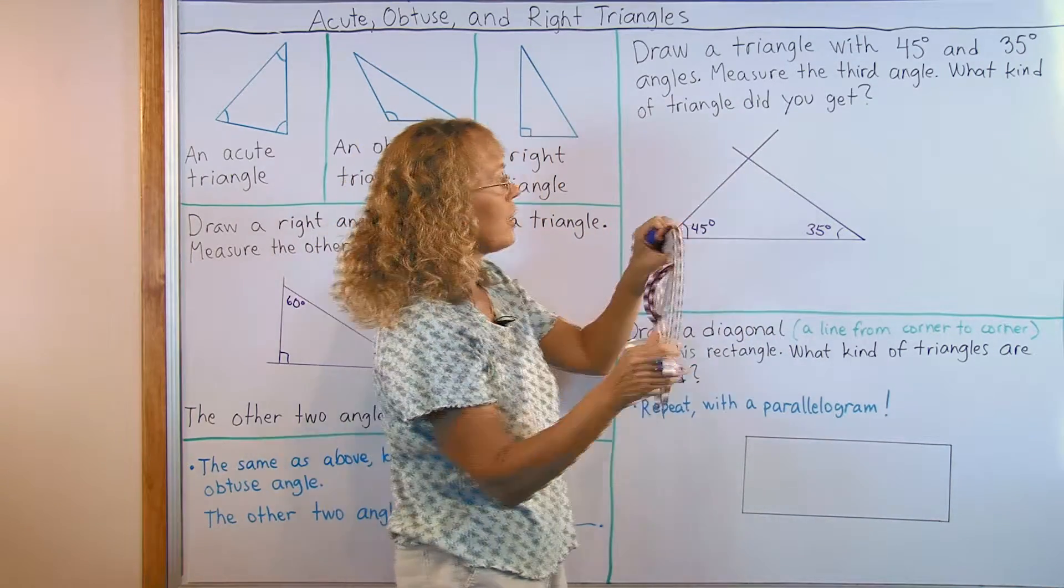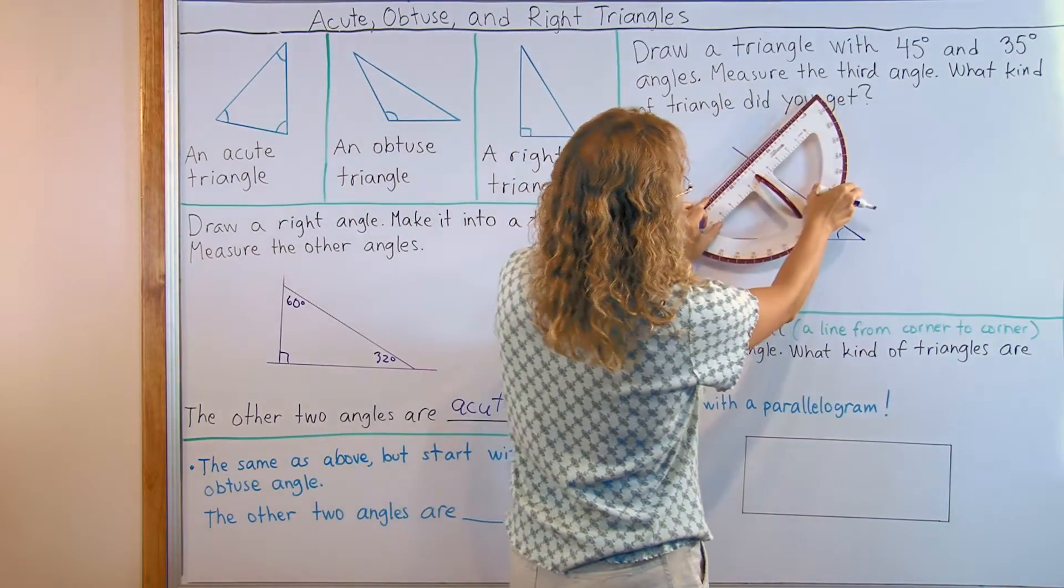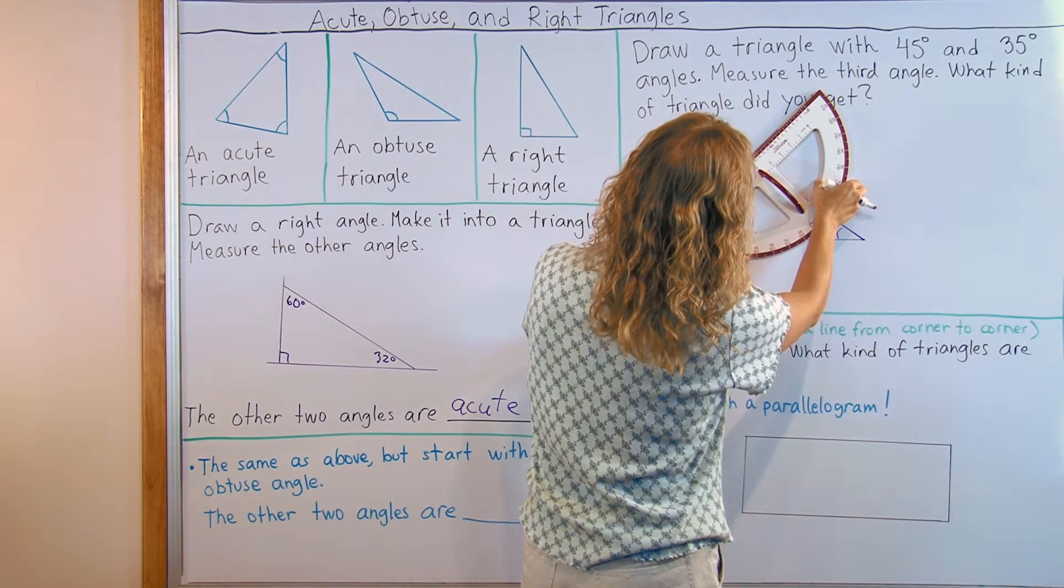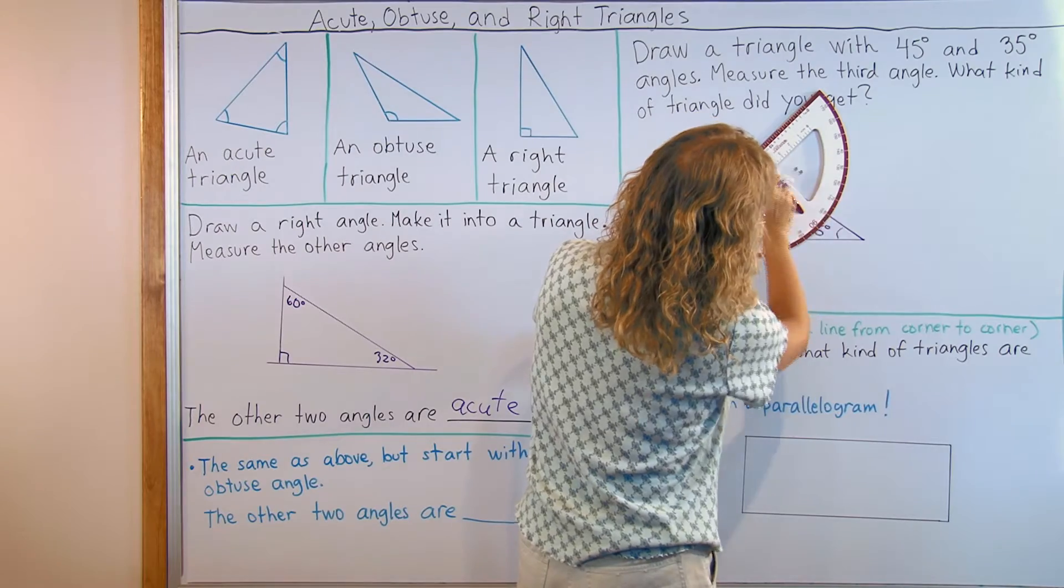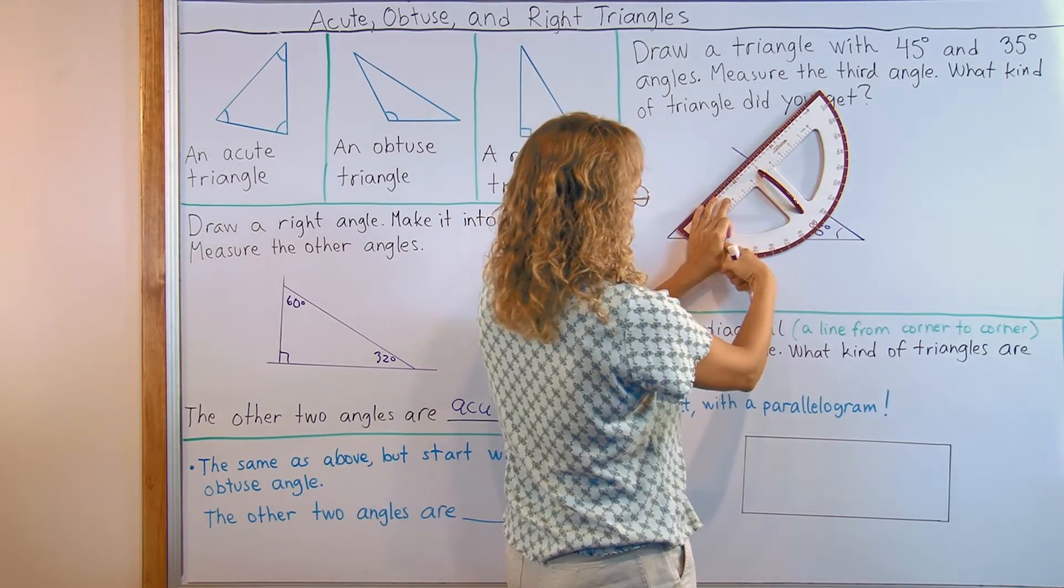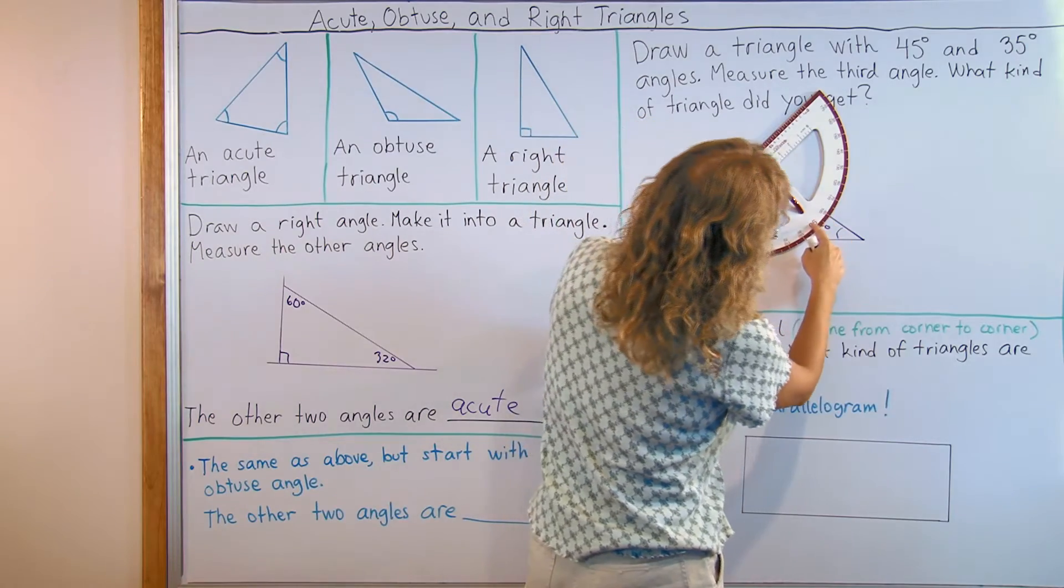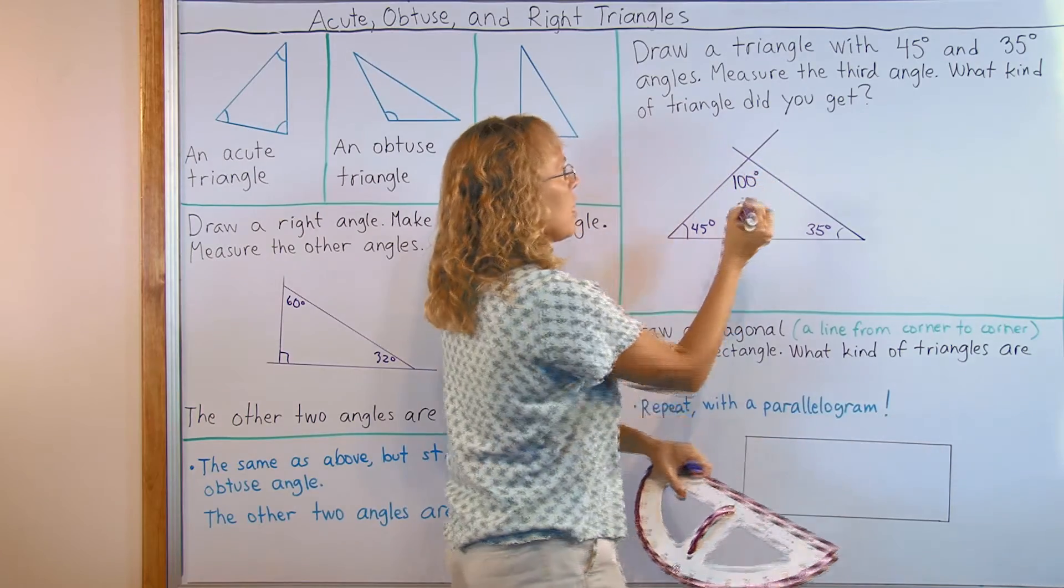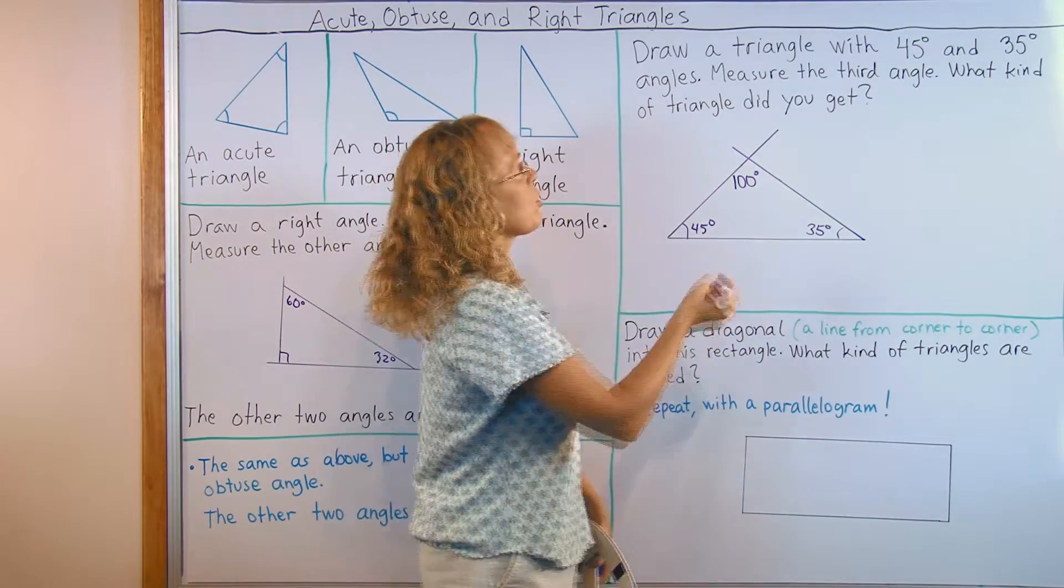So, let's measure the third angle here. I need to line up the protractor just right. This is now from here all the way to here. So I go from, it's past 90 degrees. It seems to be exactly 100 degrees.